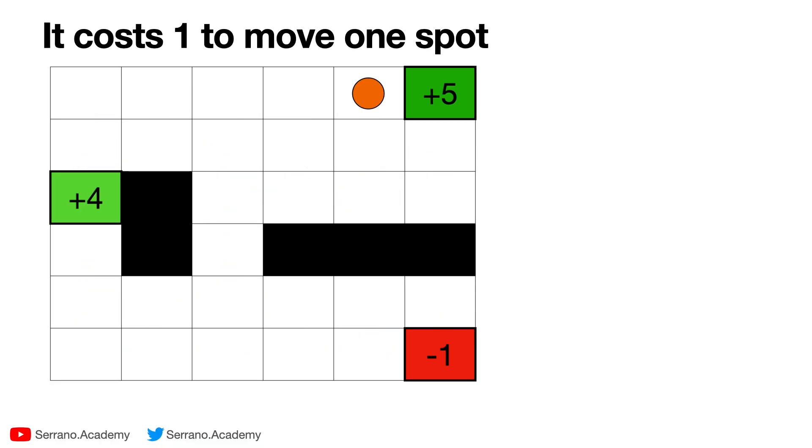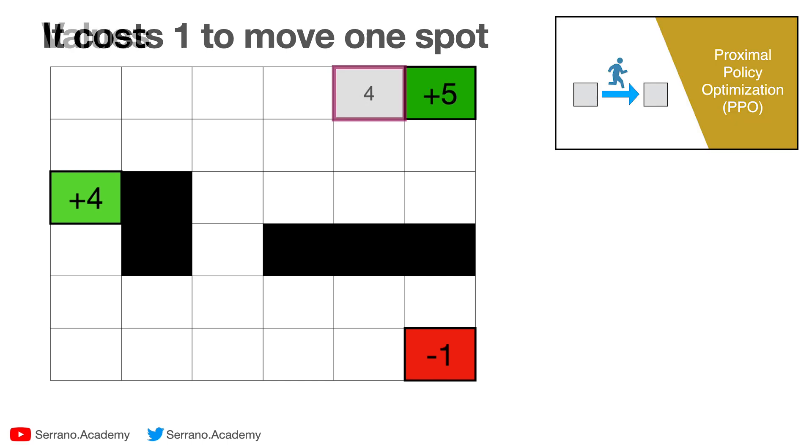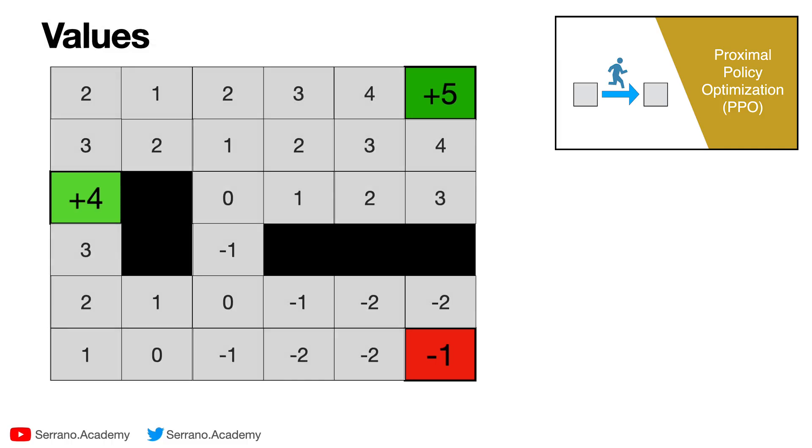Now in the example we have, it costs one point to move one spot. So let's say that we're over here in this box and we move to the five. That is the optimal choice to do there, which means that if we're in that spot, we guarantee that we have four points because it costs us one to move to the five. In the PPO video we learned how to calculate these values that are here. So wherever you are, the value of the box is the amount of points you get if you play optimally.